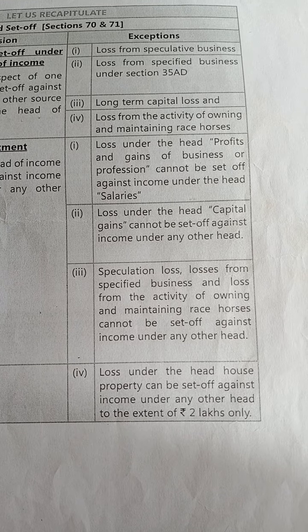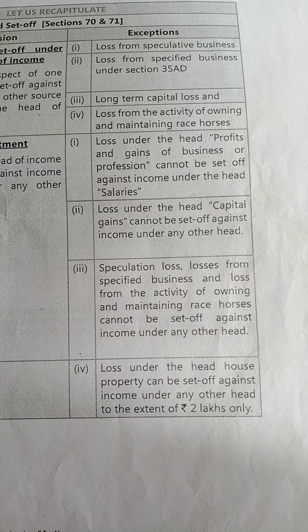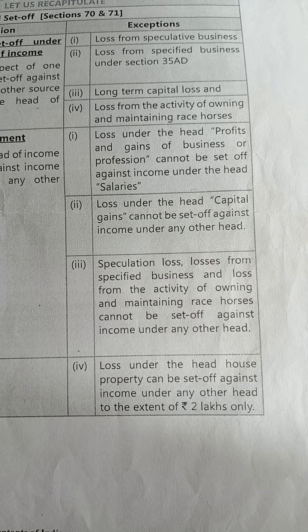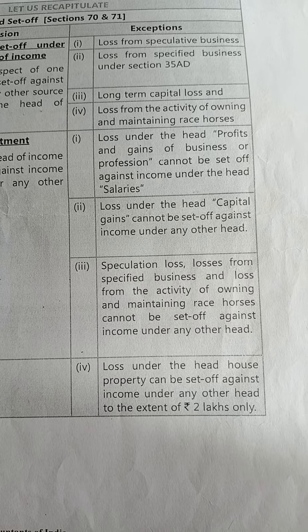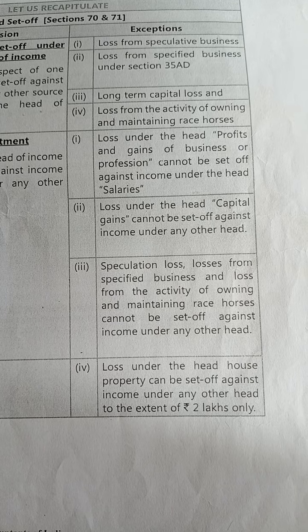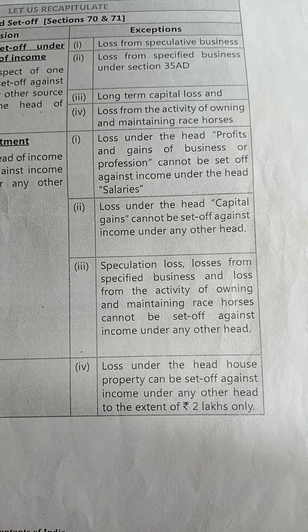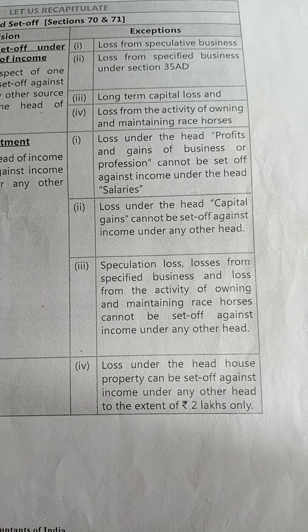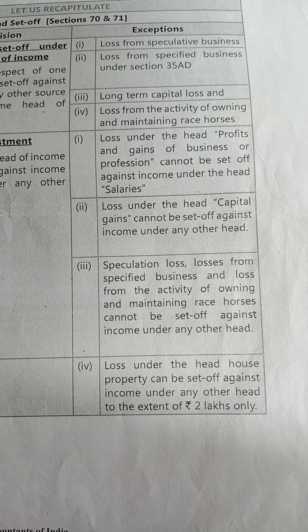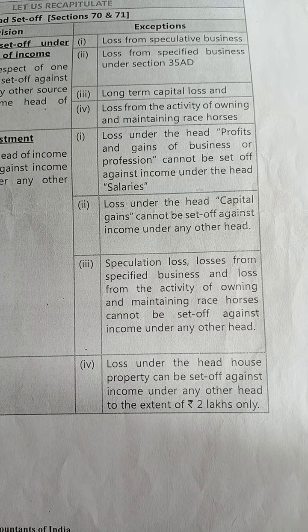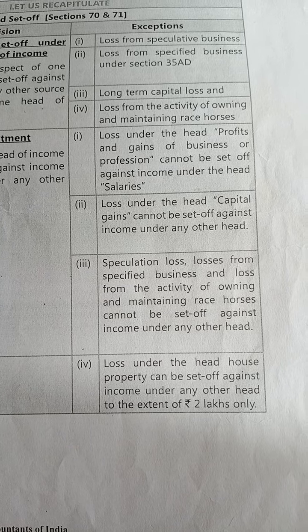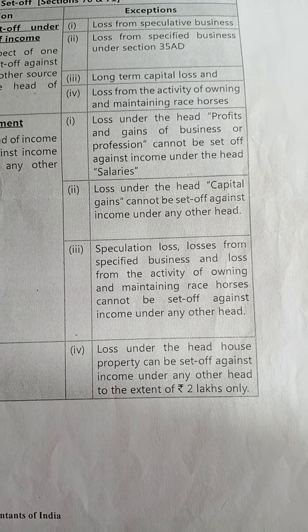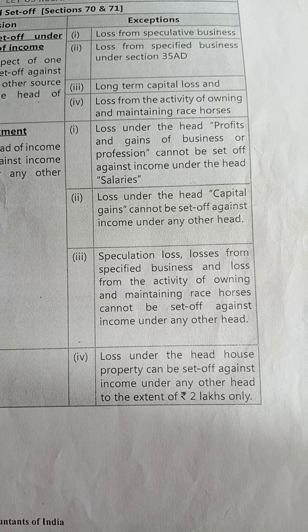Third exception: speculation loss, losses from specified business, and loss from the activity of owning and maintaining race horses cannot be set off against income under any other head. This applies for both inter-source and inter-head set off. A speculation loss is set off against speculative profit only; specified business loss against specified business income only; and race horse loss against race horse income only.